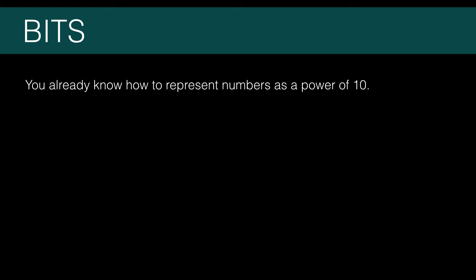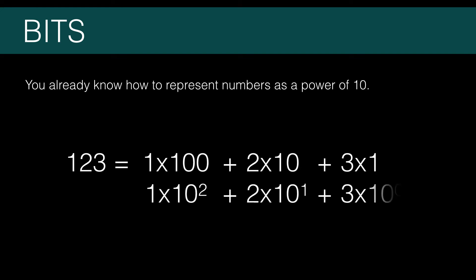Think about how you represent decimal numbers based on powers of tens. A decimal number increases by powers of tens for each decimal place. So, 123 equals 1 times 100 plus 2 times 10 plus 3 times 1. This is really 1 times 10 to the power of 2 plus 2 times 10 to the power of 1 plus 3 times 10 to the power of 0.